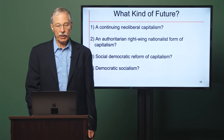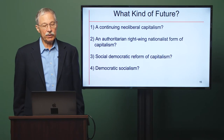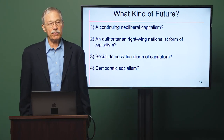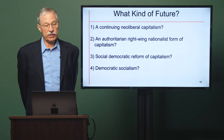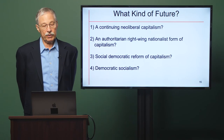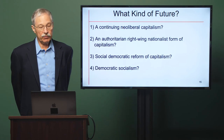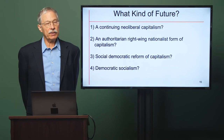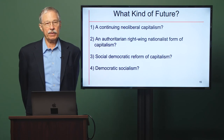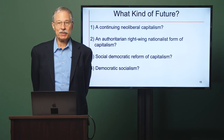What kind of future will we actually see? I believe there are four possibilities. First, a continuing neoliberal form of capitalism, which will bring endless and growing stagnation and disorder. Second, we may see an authoritarian right-wing nationalist form of capitalism that could represent a new social structure of accumulation, but it would have big problems for ordinary people and would likely produce growing global conflicts. Third, a social democratic reform of capitalism, which I believe is possible in this period. And fourth, a shift to democratic socialism — not likely in the short run, but a possibility in the farther away future. What direction will actually result will depend on the actions of groups and classes in the coming years.